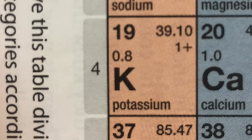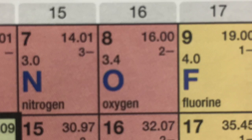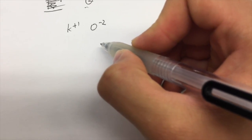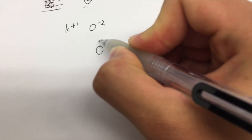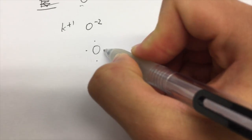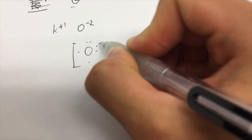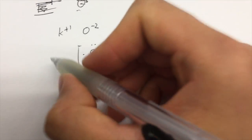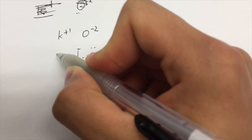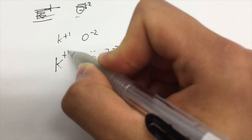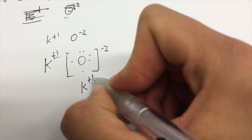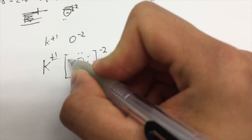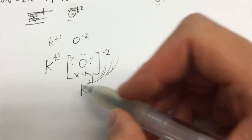Let's draw the Lewis diagram. Potassium is +1 because it has 1 electron in its outer shell. Oxygen is −2 because it has 6 electrons outside and needs 2 more. Based on the octet rule, all atoms want to fill 8 electrons in their outer shell. After the transfer of electrons, they are all satisfied with 8 electrons in the outer shell.